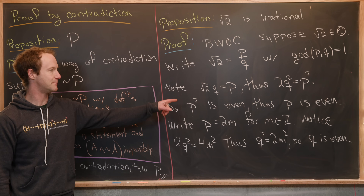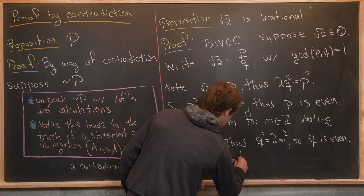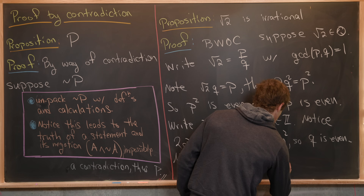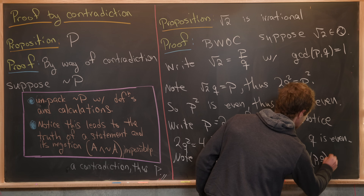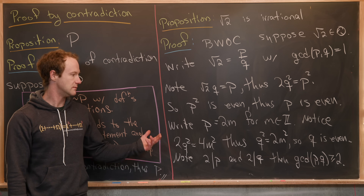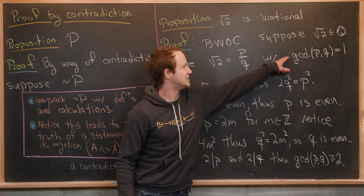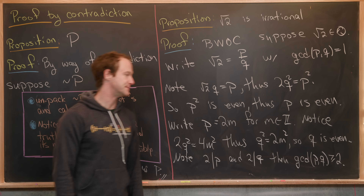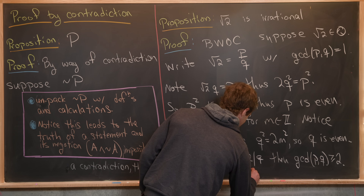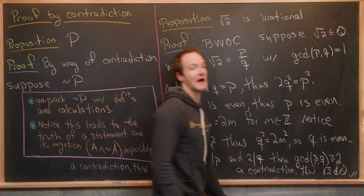But look at what we've got: p is even and q is even. So two divides p and two divides q. But if two divides both p and q, then the GCD of p and q must be greater than or equal to two, because it has a common divisor of two, meaning its greatest common divisor is at least two. But we established that the GCD of p and q is one. So GCD equals one and GCD is at least two — that's obviously a contradiction. Thus, the square root of two is not a rational number.